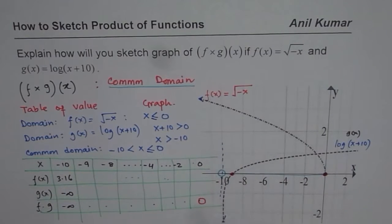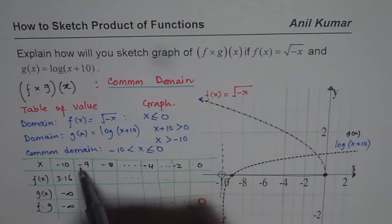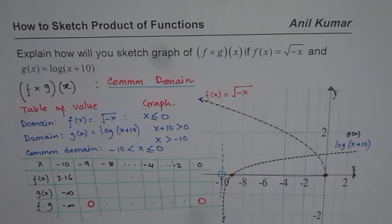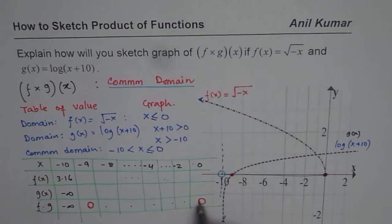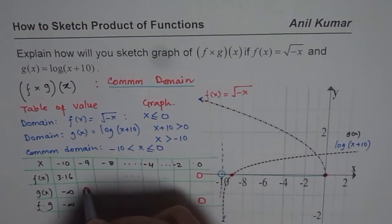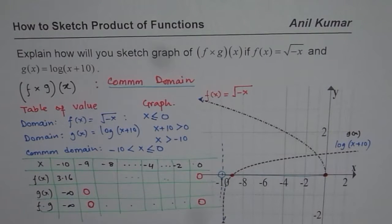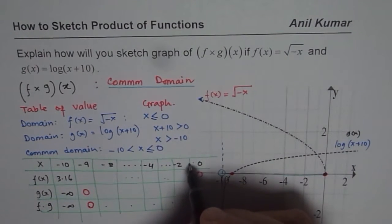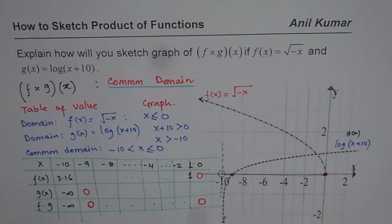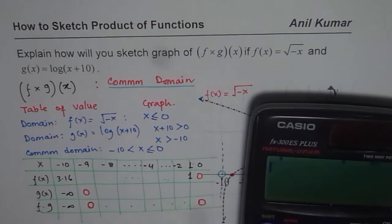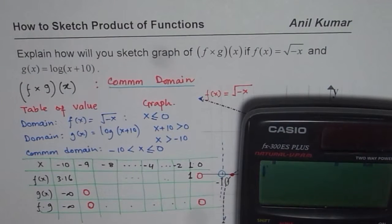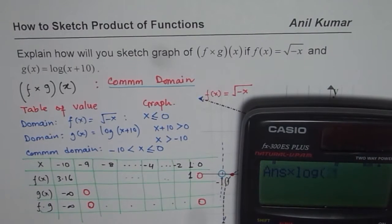Let us also include x equals minus 1 as a value. Now let us calculate the other values using the calculator. For x equals minus 8: f of x is square root of 8, and g of x is log of minus 8 plus 10, which is log of 2. Multiplying these gives us approximately 0.85.